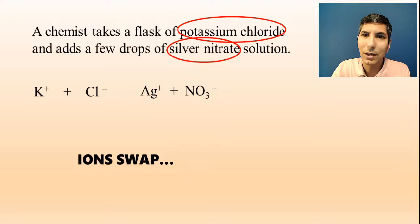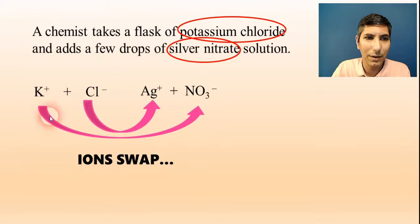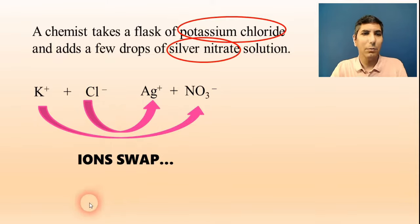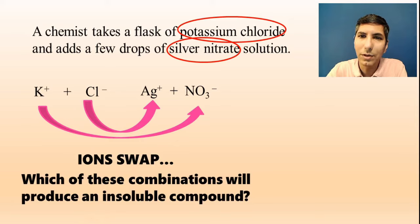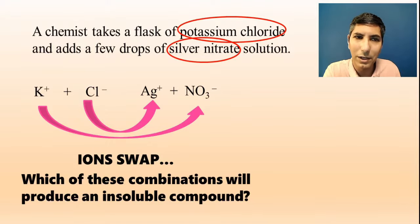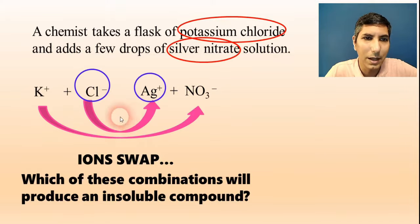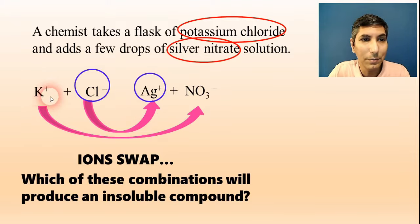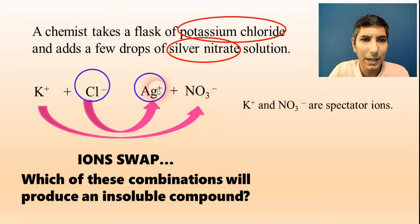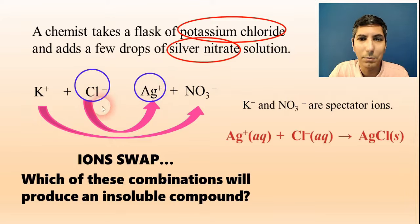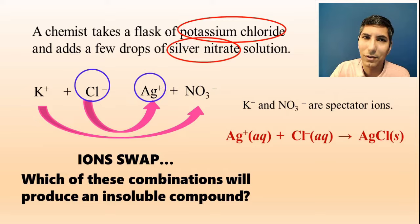Just like last time, those ions are going to try to swap partners. The outsides are going to try to get together and the insides will try to get together. We have to ask ourselves which of those combinations is going to produce an insoluble compound. All nitrates are soluble, but silver chloride is not soluble. So Ag+ and Cl⁻ are the combination that actually makes the insoluble precipitate. Your potassium ion and nitrate ions are spectator ions. We take the Ag+ and the Cl⁻, and those combine to make AgCl solid. That's how you'd write the net ionic equation for that process.